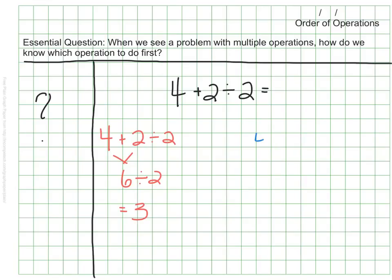Someone else might take the exact same number sentence and first do 2 divided by 2, which is 1, and then add that 4. And they would get 5.